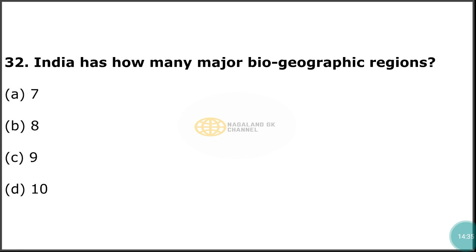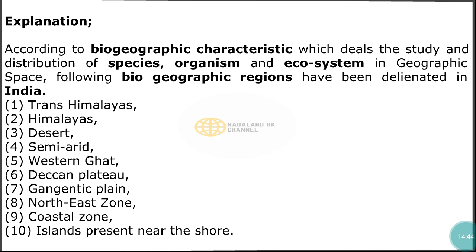Question number 32: India has how many major biogeographical regions? The correct answer is option D — ten. According to biogeographical characteristics, which deals with the study and distribution of species, organisms, and ecosystems in geographic space, ten biogeographical regions have been delineated in India: 1) Trans-Himalayas, 2) Himalayas, 3) Desert, 4) Semi-arid, 5) Western Ghats, 6) Deccan Plateau, 7) Gangetic Plain, 8) North-East Zone, 9) Coastal Zone, and 10) Islands near the shore.